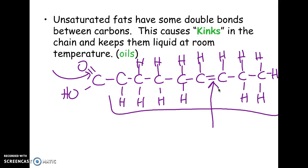In reality, wherever there's a double bond, the fatty acid chain is going to kink or bend, and that's what makes it liquid at room temperature. Think of it like a stack of papers: if all the papers are perfectly straight, they stack easily and form a compact solid — that's saturated fat. But if one paper is wrinkled, they won't compact as easily, so unsaturated fats with double bonds tend to be liquids at room temperature.